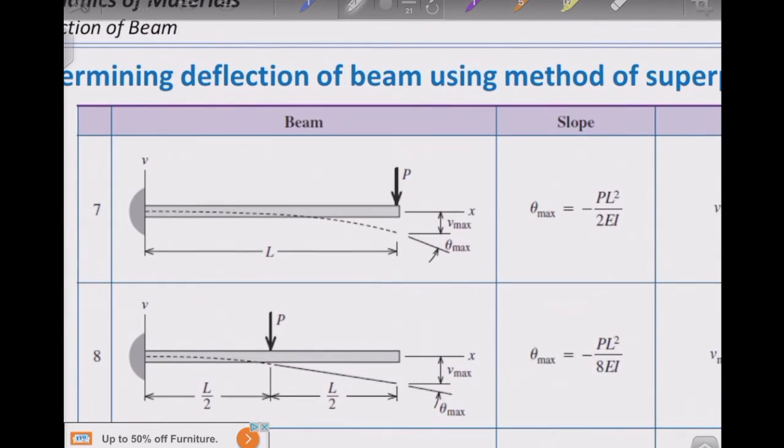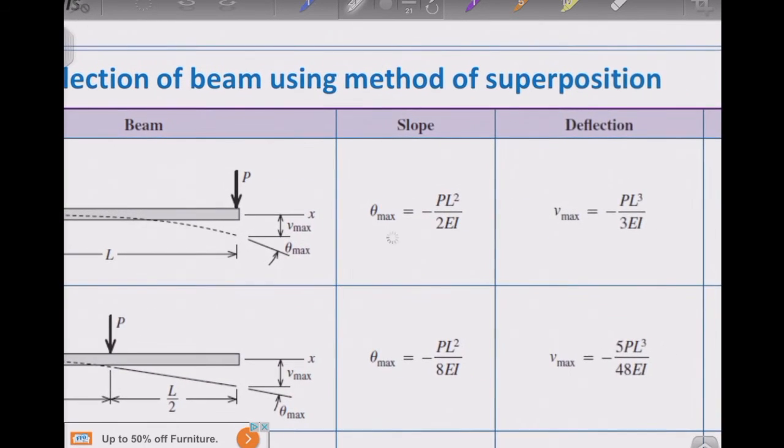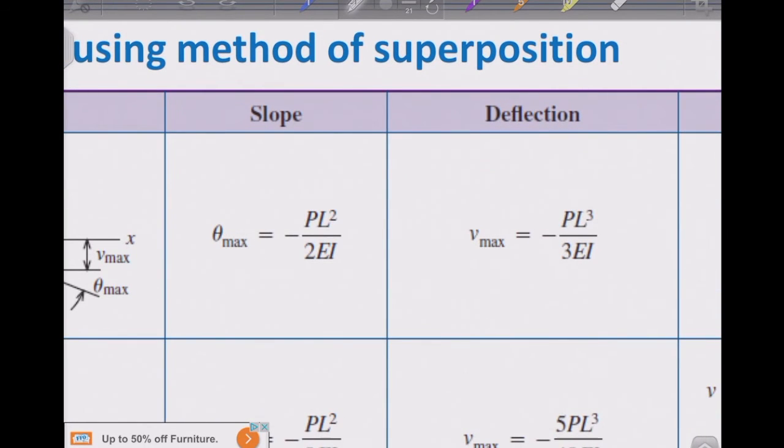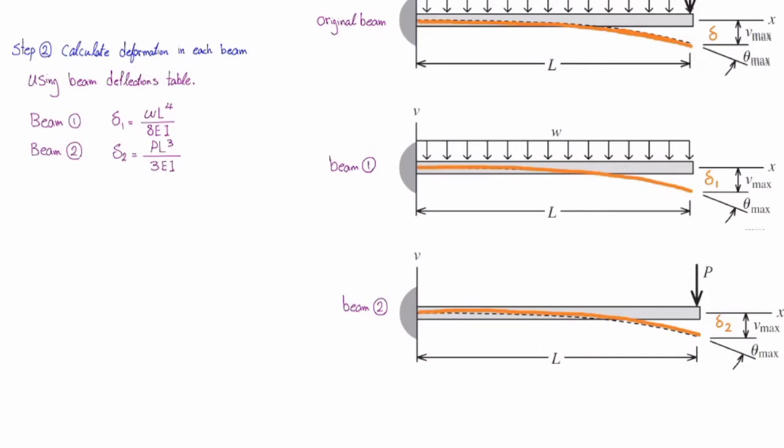So I need to go and pick up the appropriate value from that table. I need to work with this figure. And the maximum deflection at the right end is PL cubed over 3EI. And that would be deflection of second beam at the same point.